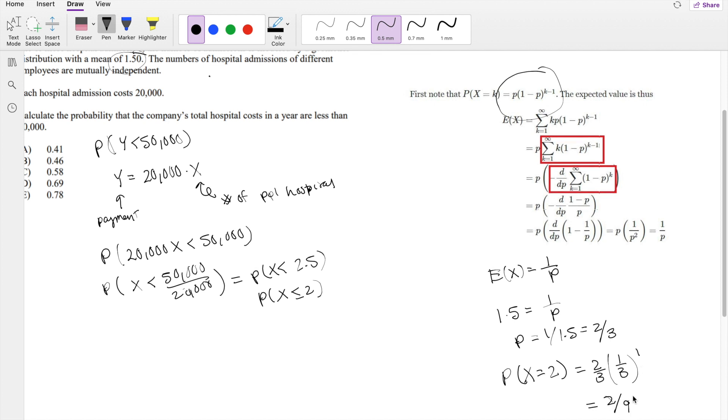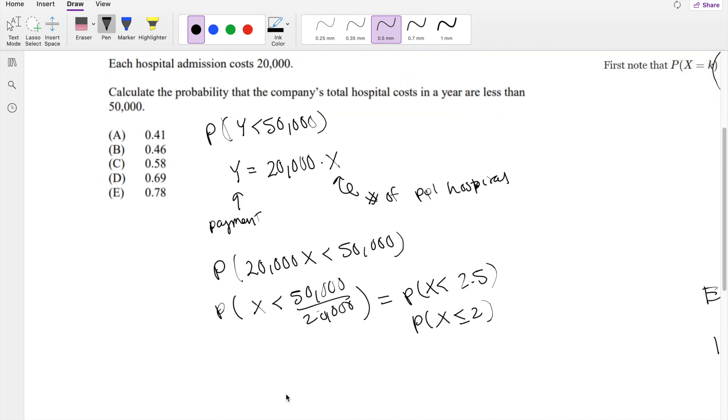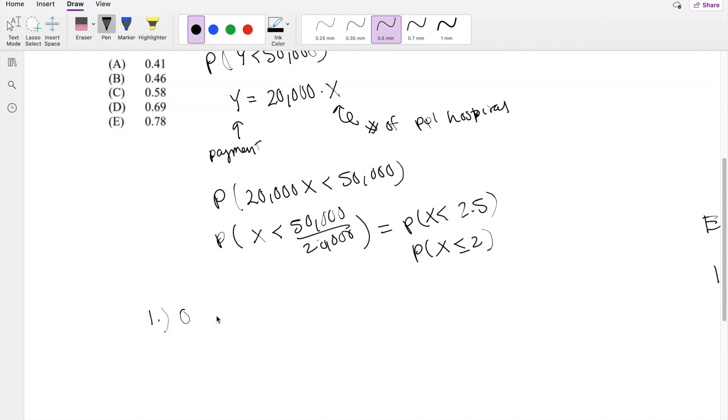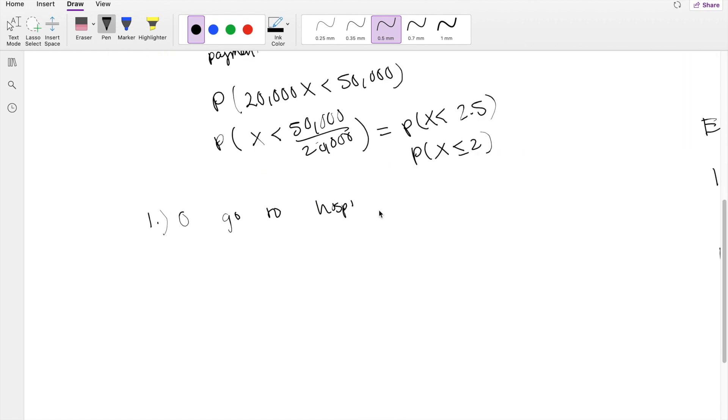So how many ways can we have 2 people go to the hospital, or less than 2 people go to the hospital? Well, case number 1, if 0 people go to the hospital. So what is that probability? They all have an 80% chance of no hospital admissions.